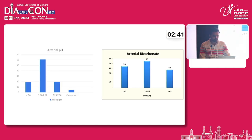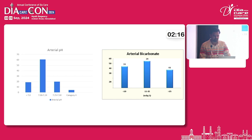Arterial pH was less than 7.24 in most patients, with 20% showing a pH of less than 7, and 20% showing a pH of more than 7.25. Regarding arterial bicarbonate, 24% of patients had bicarbonate levels of 11–15 mEq/L, 33% had less than 10 mEq/L, and 43% had more than 15 mEq/L.